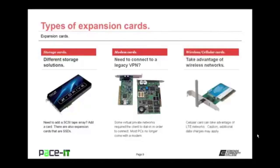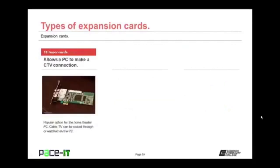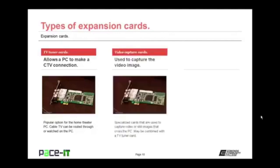There are wireless and cellular network cards that allow you to take advantage of wireless networks. A cellular card can take advantage of LTE or 4G networks — though caution, additional data charges may apply. A TV tuner card allows a PC to make a cable television connection, popular for home theater PCs. Video capture cards are used to capture video images — specialized cards capture video and/or still images that cross through the PC, and may be combined with a TV tuner card.